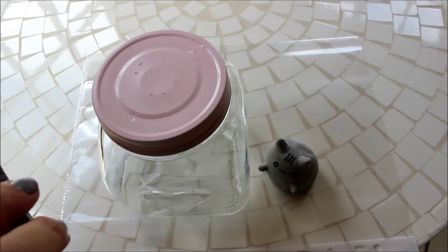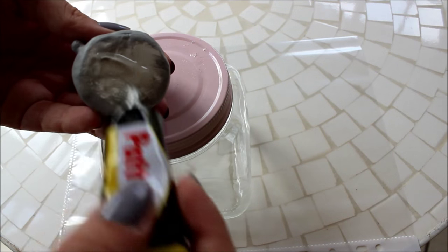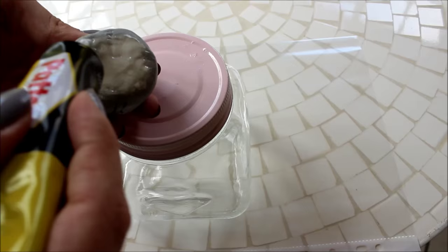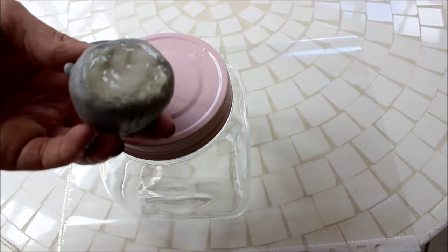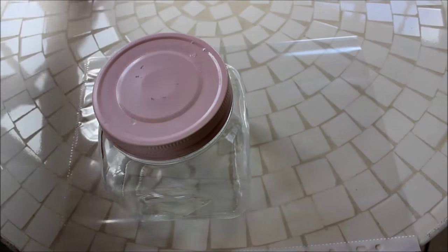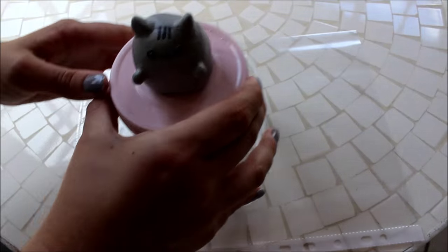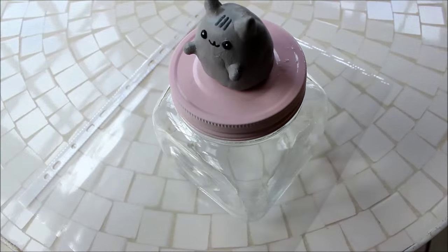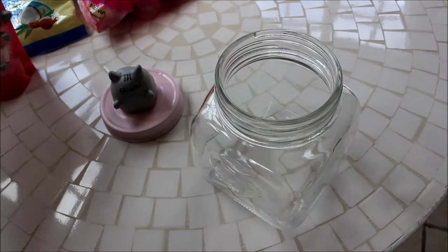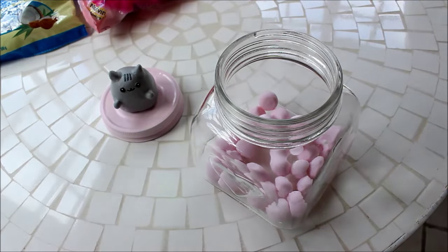To attach your Pusheen to the lid of the jar, place the lid on the jar and glue the Pusheen into place to make sure it's facing the right direction. Finally, fill up your jar with sweets and your Pusheen candy jar is complete.